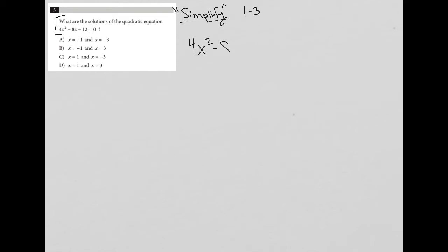hopefully you see here that there is a GCF that is equal to 4. So when I pull a 4 out here, since it's an equation, I could just divide the entire thing by 4.